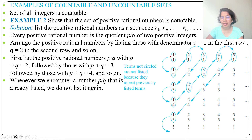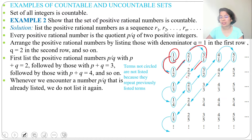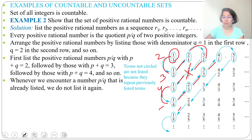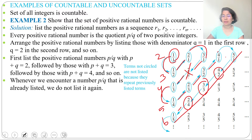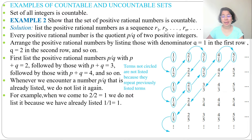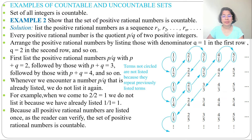We first list 1/1, then 1/2, then 2/1, then 3/1. Then 2/2 — but 2/2 equals 1/1, which is already listed, so we skip it. Next we list 1/3, 1/4, 2/3, 3/2, 4/1. We skip 2/4 (equals 1/2), 4/2 (equals 2/1), and 3/3 (equals 1). Since we can list all positive rational numbers in a one-to-one correspondence with the positive integers, the set of positive rational numbers is countable.